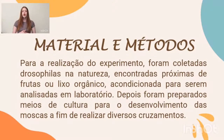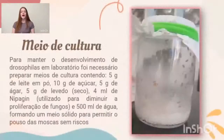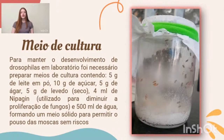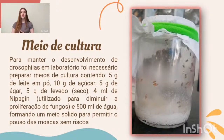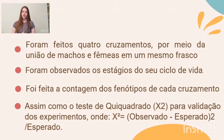Elas foram acondicionadas e levadas ao laboratório para análise. Foi preparado o meio de cultura contendo 5g de leite em pó, 10g de açúcar, 5g de levedo, 4ml de nipagin — utilizado para diminuir a proliferação de fungos — e 500ml de água. Foram feitos 4 cruzamentos a partir da união de machos e fêmeas no mesmo frasco. Depois foram observados os estágios do ciclo de vida e feita a contagem dos fenótipos de cada cruzamento.